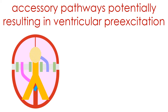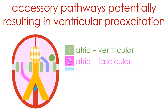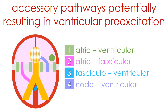Which are the accessory pathways that can potentially result in ventricular pre-excitation? First, the atrioventricular accessory pathways. Second, the atriofascicular tracts. Third, the fasciculoventricular anomalous bundles. And finally, the nodoventricular fibers.